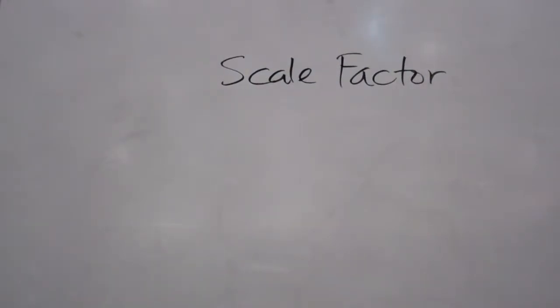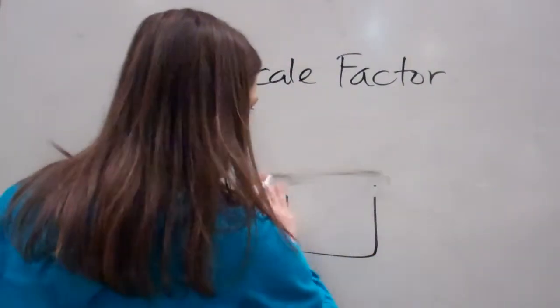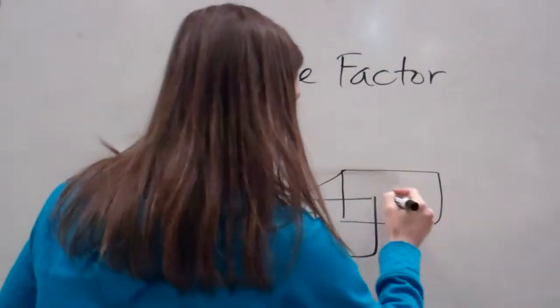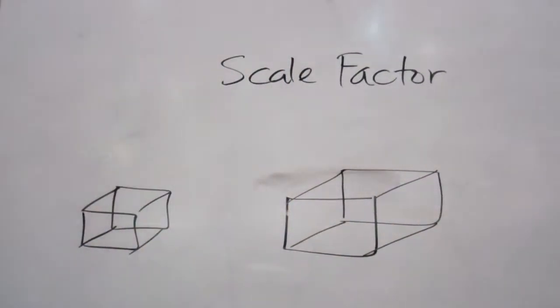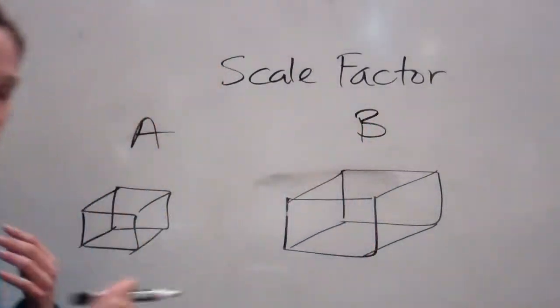What do we know about rectangular prisms? It's three dimensions. So, I'm going to do my best to quickly draw this three-dimensional rectangle. There's my small one. And this is my large one. Everybody see my big one and my little one? And I'm going to label this cube A and cube B.